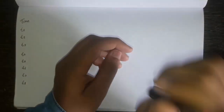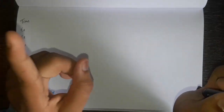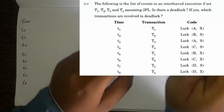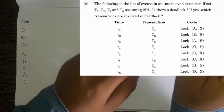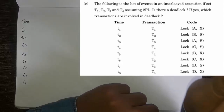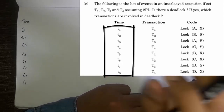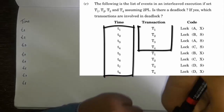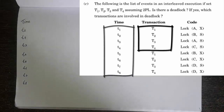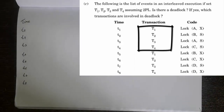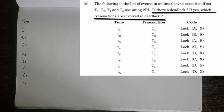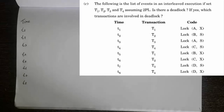First I am going to show you what the question is. You can see this is the question in which there are three things: time, transaction, and code. In time there are eight slots T1 to T8. In transaction there are four slots which are repeated twice, and then there is code. The question asks: is there a deadlock, and if yes, which transactions are involved in the deadlock?